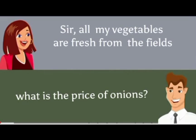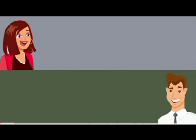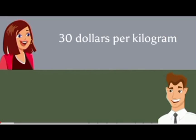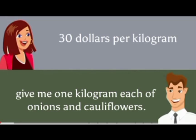What is the price of onions? Sir, $25 per kilogram. What is the rate of cauliflower? $30 per kilogram. Give me 1 kilogram each of onions and cauliflowers.